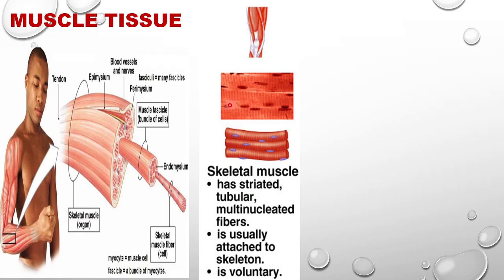Skeletal muscle has striations — alternate light and dark bands. The dark bands are due to overlapping of fibers, and wherever there is no overlapping it shows light color. This is present to provide flexibility so that the muscles can contract and relax and thereby carry out movement in the body. Skeletal muscle is voluntary — we can move it with our will, and it is directly under the action of our brain.